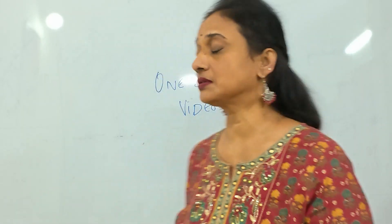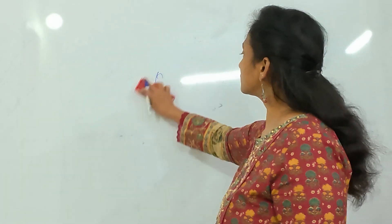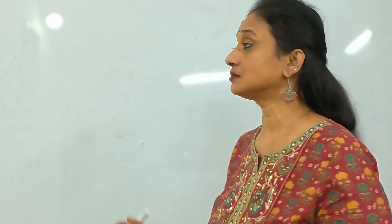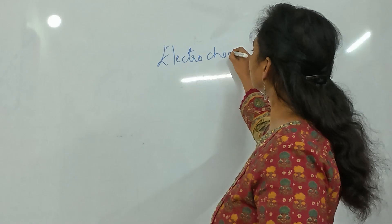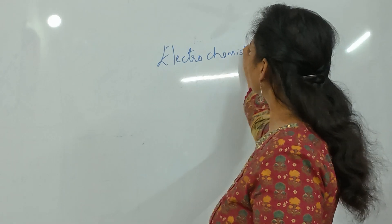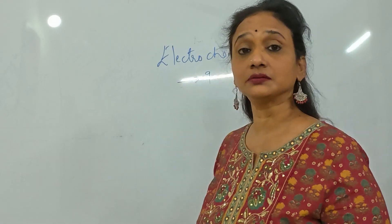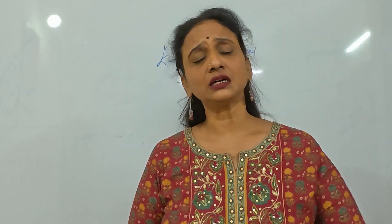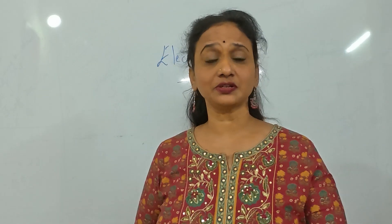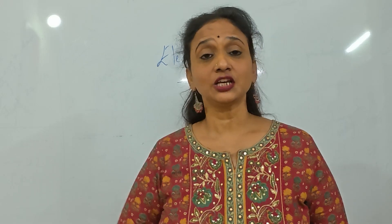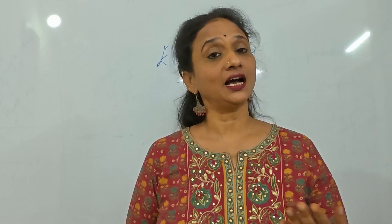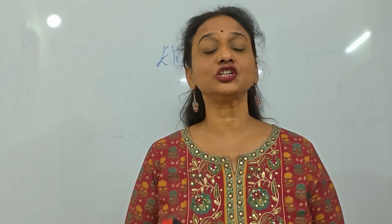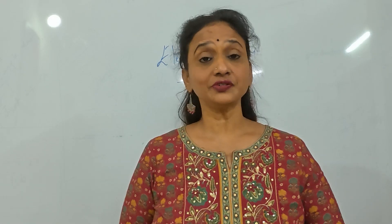Now we are going to study the electrochemistry chapter. The weightage of electrochemistry is nine marks. It is a big physical chemistry chapter — in fact, among all the physical chemistry chapters, this one carries the maximum marks. If you study this chapter perfectly, you can get all nine marks out of 23 total marks for that section.